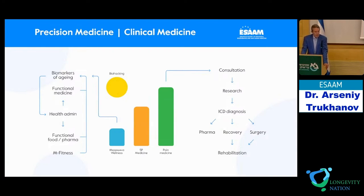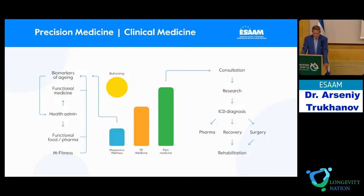What is the difference between clinical medicine and anti-aging medicine? In clinical medicine, the key words are pain medicine — we can call any hospital today a pain clinic — and the main goals of the physician are consultation, research, diagnosis, pharma, recovery, surgery, and finally rehabilitation. If we speak about modern anti-aging medicine, it's wellness medicine, biohacking, biomarkers of aging, functional medicine, health administration, functional food, and medical fitness. In total, we call it today 5P medicine, although we started from P medicine in 2003.